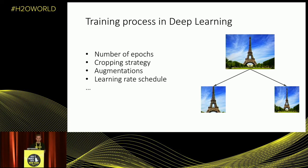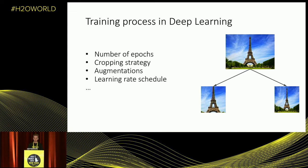Apart from that, we also need to select the training process: how long we're going to train, the number of epochs, the cropping strategy — for example, whether to make random crops or resize images — what augmentations to apply to our data, and the learning rate schedule. All of this is done automatically in driverless AI, selecting based on your data size, number of classes, and all the peculiarities of your data. It selects the optimal hyperparameters and training strategy and trains the best model it can.